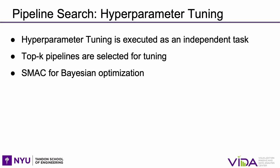While some AutoML systems treat the task of building pipelines as a combined algorithm selection and hyperparameter optimization problem, AlphaD3M performs hyperparameter tuning as an independent task. AlphaD3M synthesizes and evaluates pipelines using primitives with default hyperparameter values. The pipelines are then ranked by performance and the top-k pipelines are selected for tuning. AlphaD3M uses SMAC, a Python library, for Bayesian optimization.